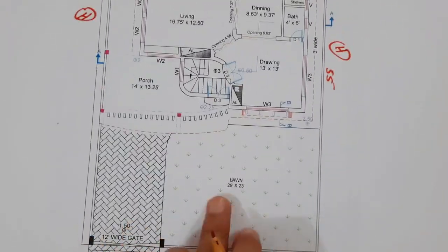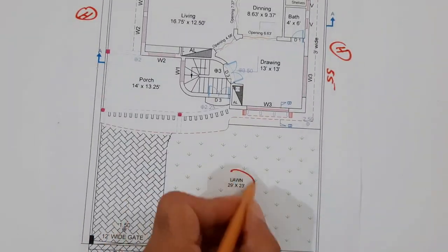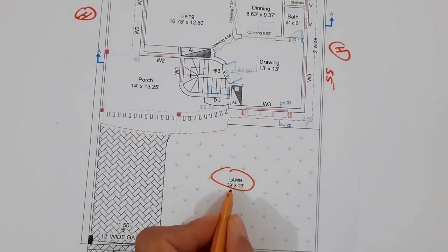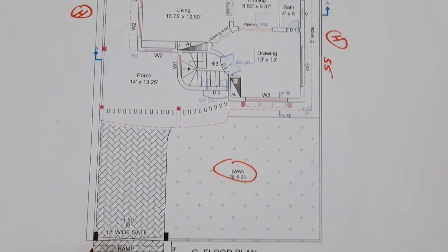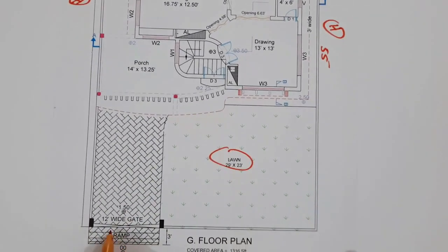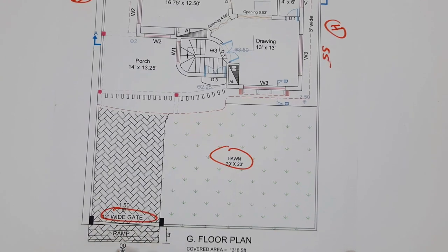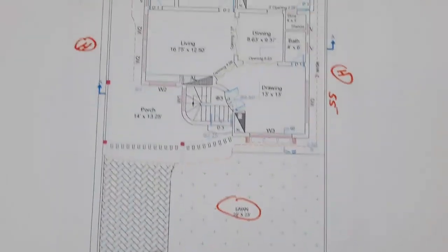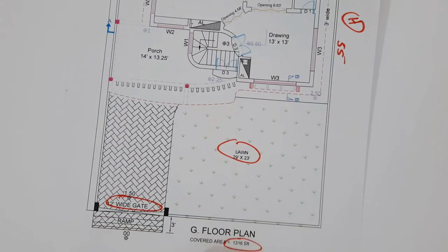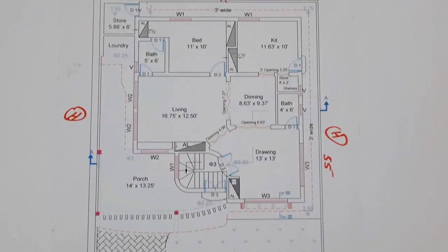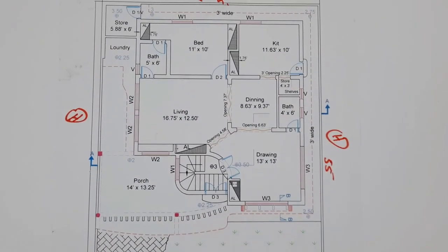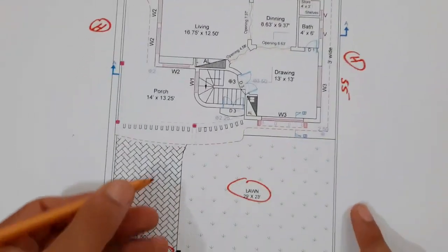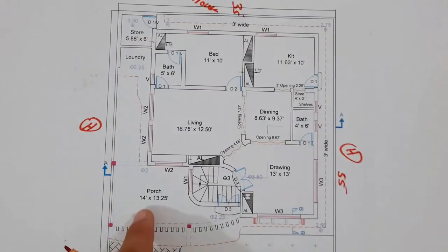Here you can see this is the lawn, and the size of the lawn is 29 feet by 23 feet. This is the main gate which is 12 feet, and this is the ramp. The covered area is 1,316 square feet.